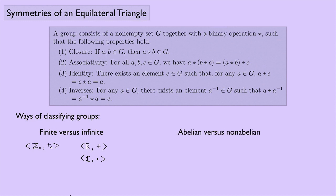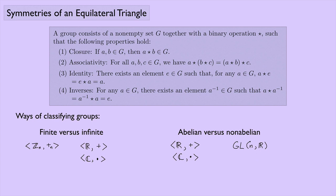We could also look at abelian versus non-abelian groups. We saw a bunch of abelian groups — the integers mod n and the complex numbers under multiplication, and plenty more. For non-abelian groups, we just saw one so far: the general linear group, which is the group of n by n matrices with real entries and non-zero determinants. That was a non-abelian group.